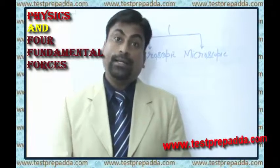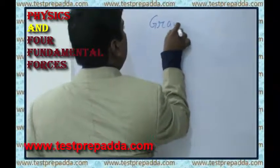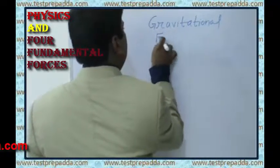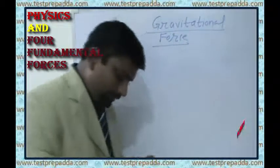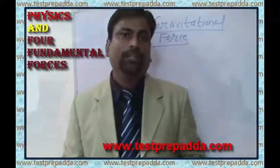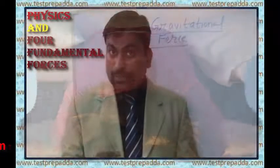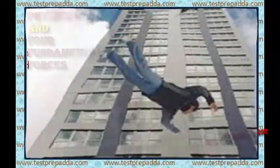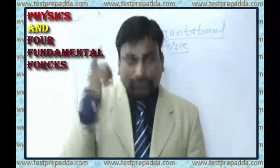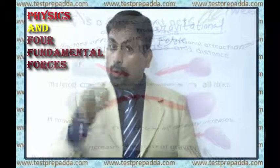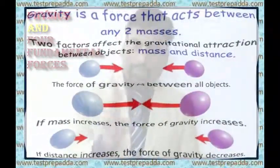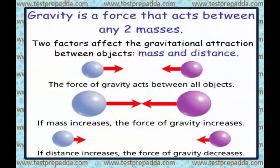Now I am going to discuss these four fundamental forces. First of all, I will take gravitational force. The first fundamental force: gravitational force. You must be aware of gravitational force. Whenever a kid falls from a bed, we say it's because of gravity. Whenever we fall from height, we say it's because of gravity. If you drop a stone from height, it reaches the ground — that is because of gravitational force. Whenever two objects have masses, they will be attracted because of gravitational force. This gravitational force is a universal force — every object present in this universe is attracted by every other object.